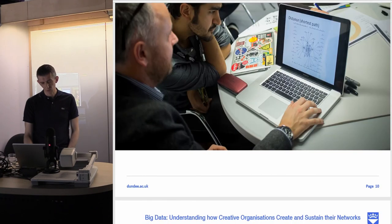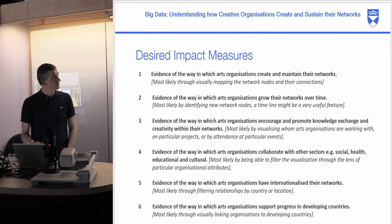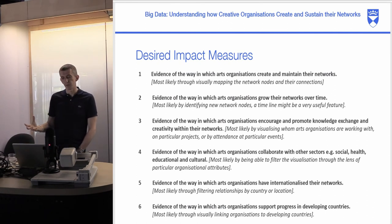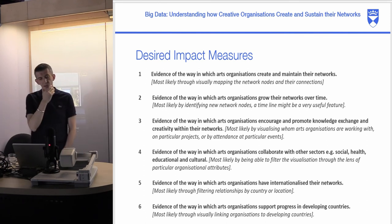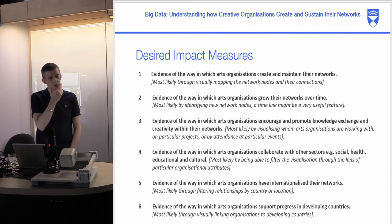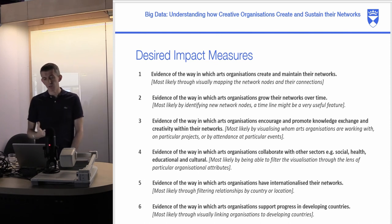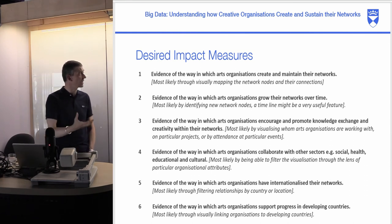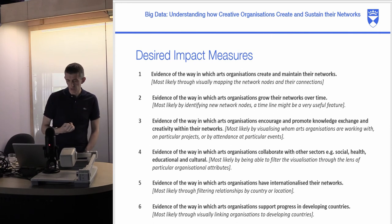Out of that workshop, we established six desired impact measures for the project. The first was to evidence the way in which organizations create and maintain their networks — how do they manage, develop, and sustain the life of what they're all about. The second was evidence of the way arts organizations grow their networks over time, always looking for ways to develop, expand, and find future opportunities.